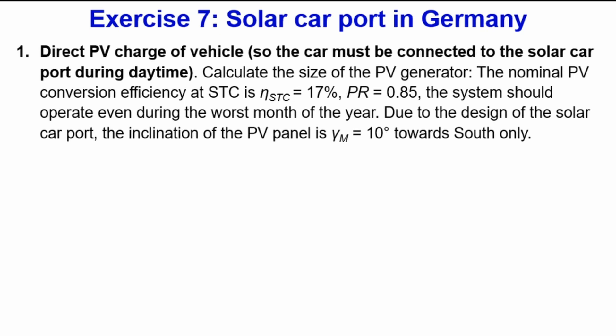Consider a performance ratio of 0.85 and a PV conversion efficiency under standard test conditions of 17%. To calculate the actual irradiance we use a program called PVSYST, though other programs like MeteoNorm also exist for irradiance calculations.